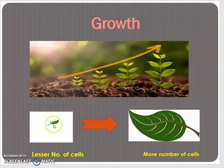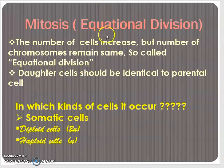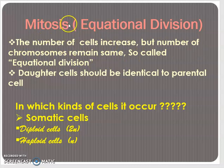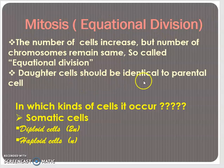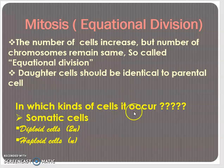If we take a cell from the seedling leaf and a cell from the mature leaf, the chromosome number of both cells will be the same. So, the division in which the number of cells increases should be one in which the number of cells increases but the number of chromosomes remains the same. Such a type of division is called mitosis, and it is also known as equational division for the same reason. Mitosis occurs in somatic cells, whether they are diploid or haploid.